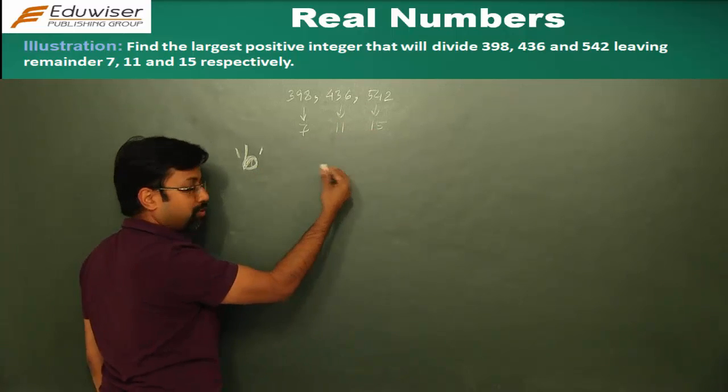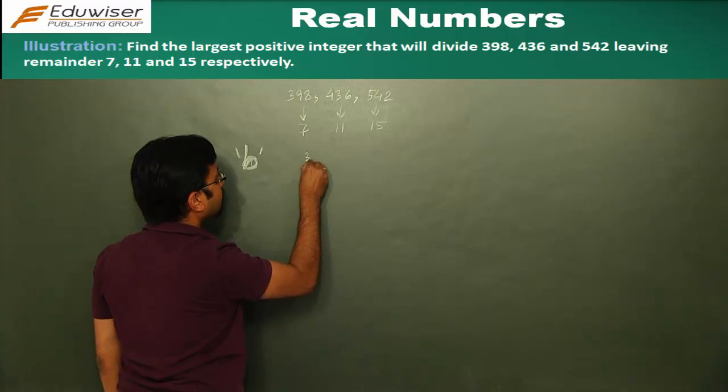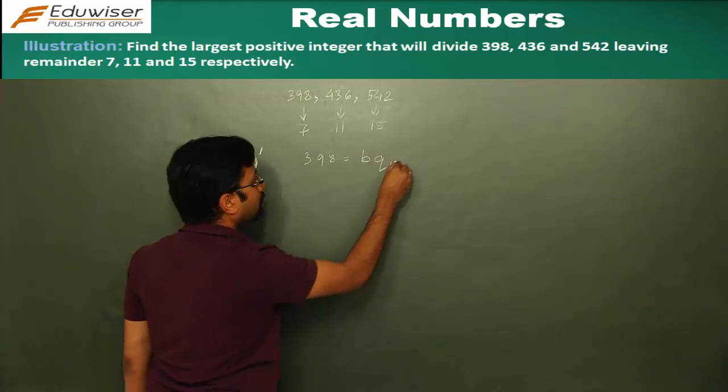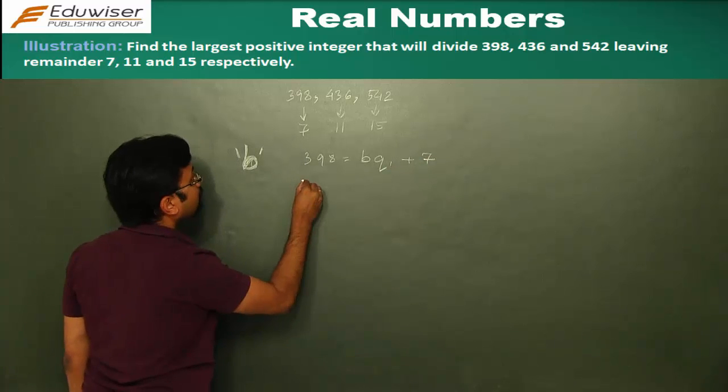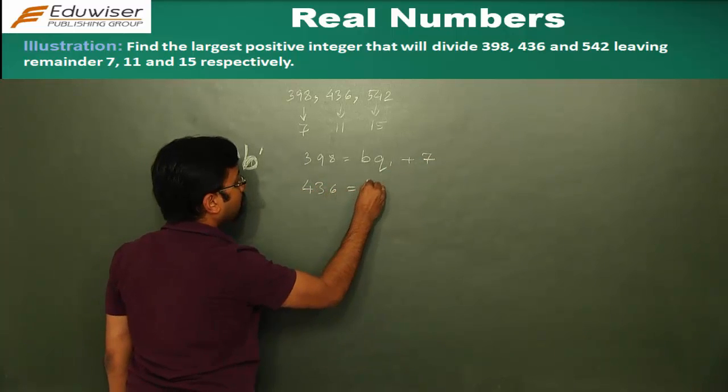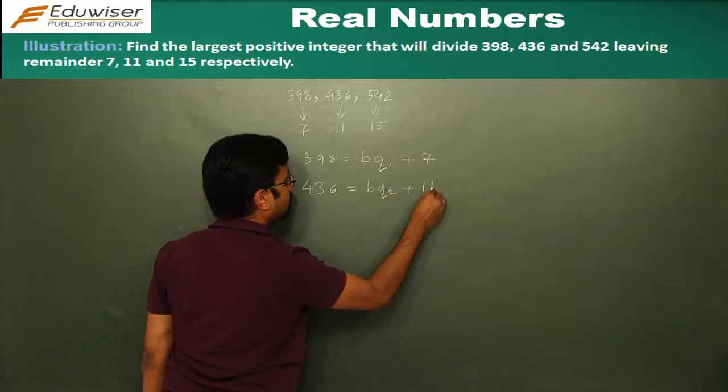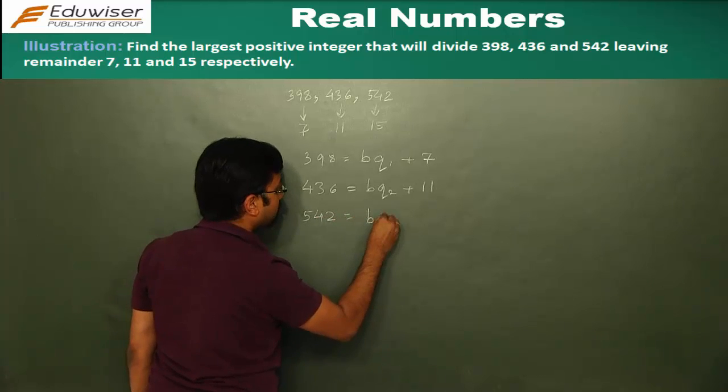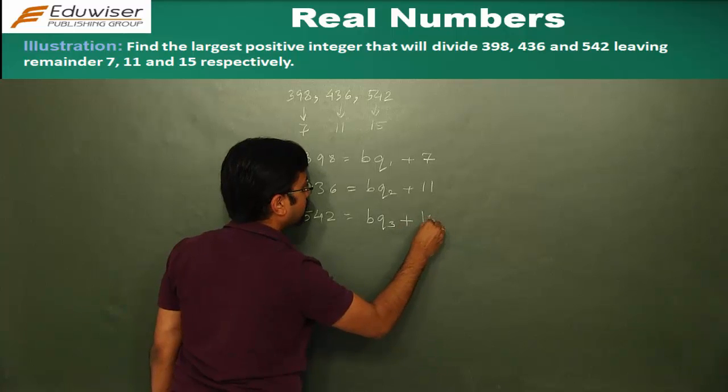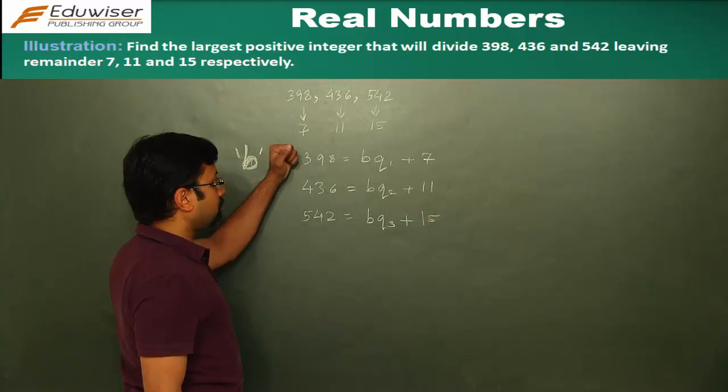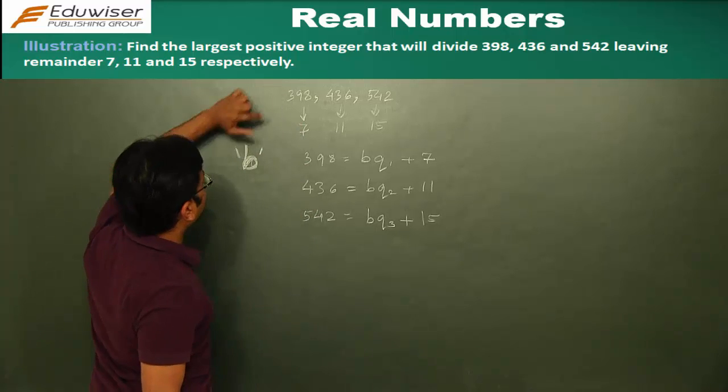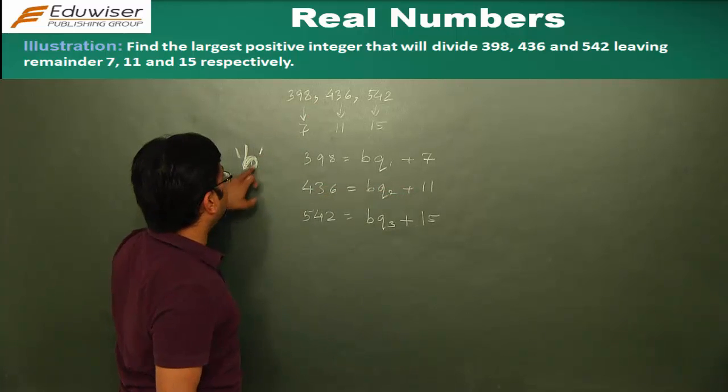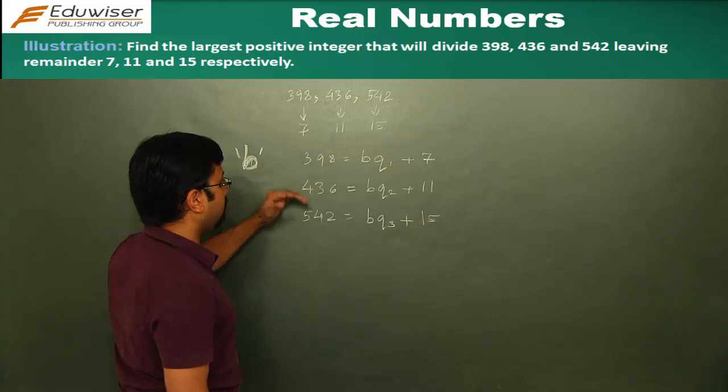So from Euclid's division lemma, what do you have? 398 will be B into Q1, some quotient plus a remainder 7. 436 would be B into some other quotient plus a remainder 11, and 542 will be B into Q3, some quotient plus a remainder 15. This is applicable because this is Euclid's division lemma. When B divides 398, you get a remainder 7. When B divides 436, you get a remainder 11 and when B divides 542, you get a remainder 15. So these are the three equations that we get.